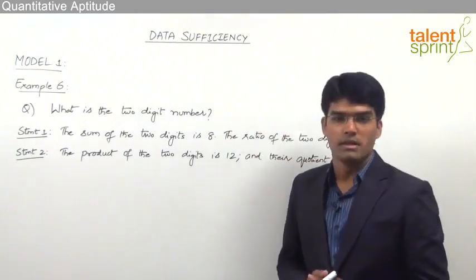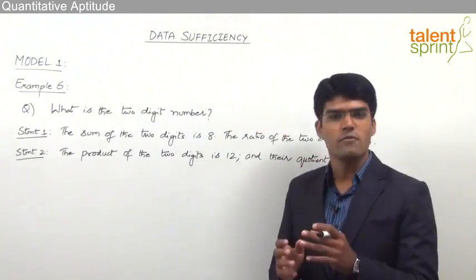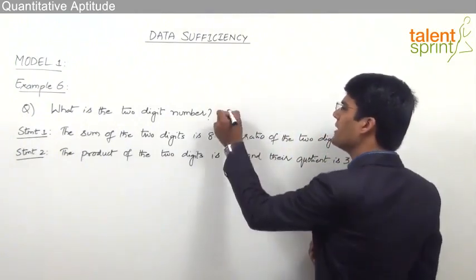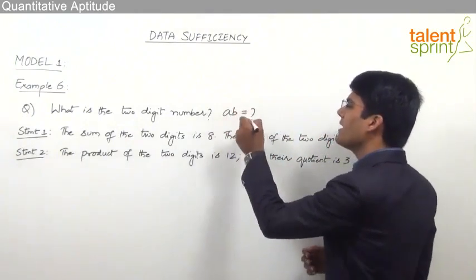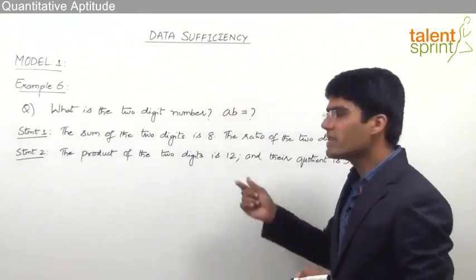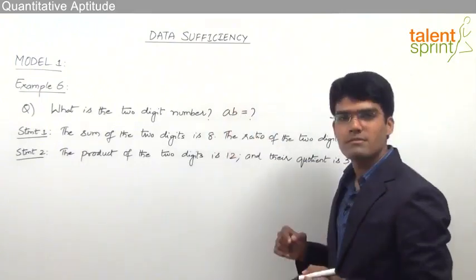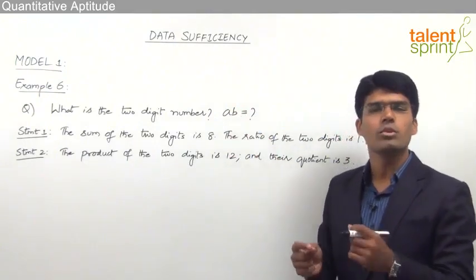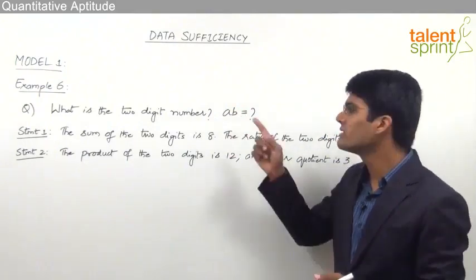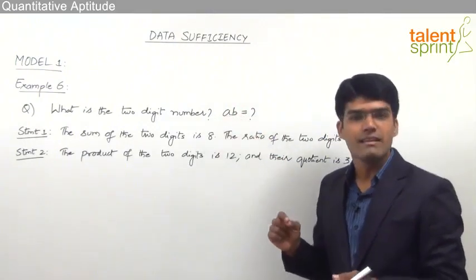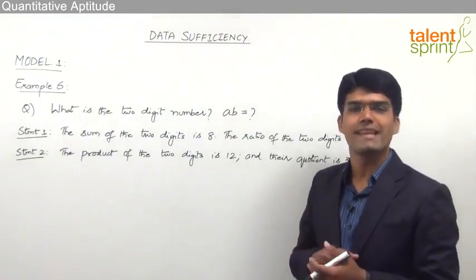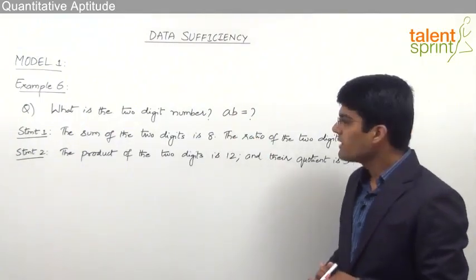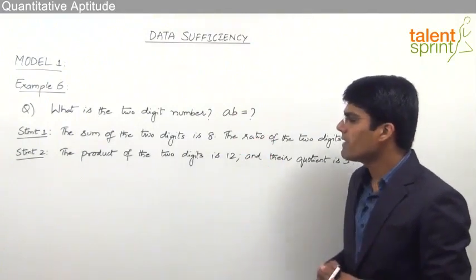The question here is: what is the two-digit number? So we have to find out the two-digit number. Let's say the two-digit number is AB — so AB has to be determined. We know that the two-digit number can be obtained only when we know both the digits: the units digit B and the tens digit A.